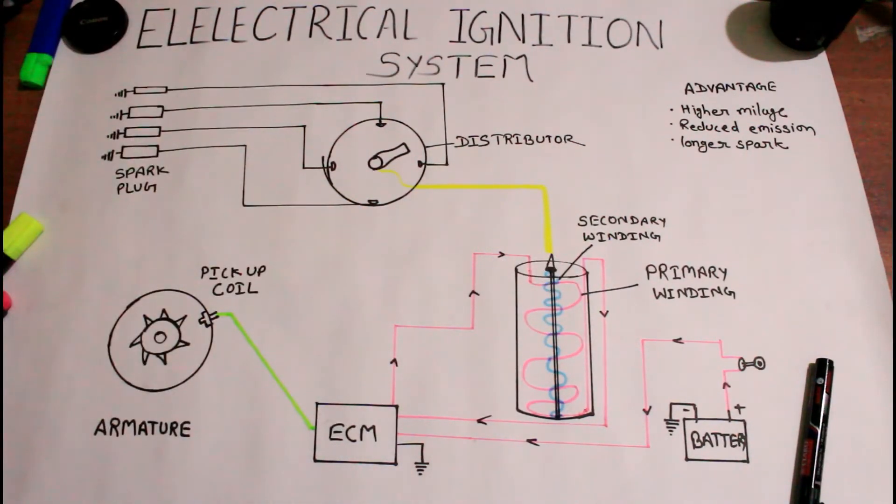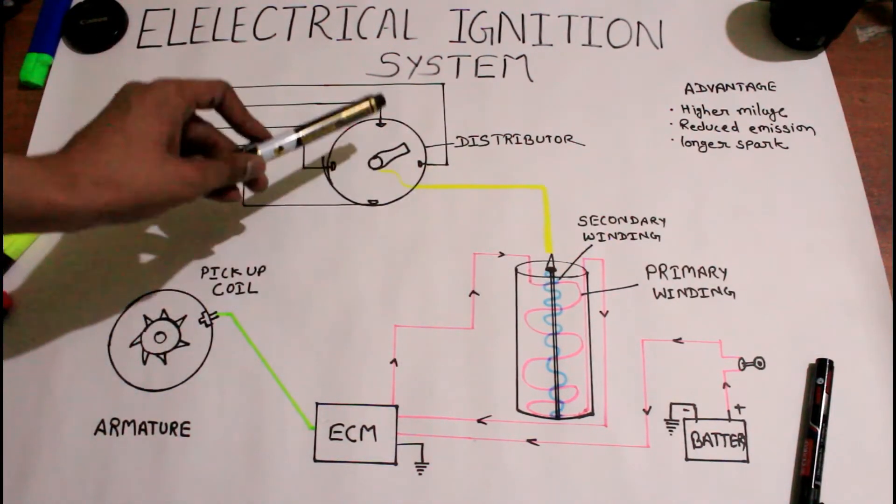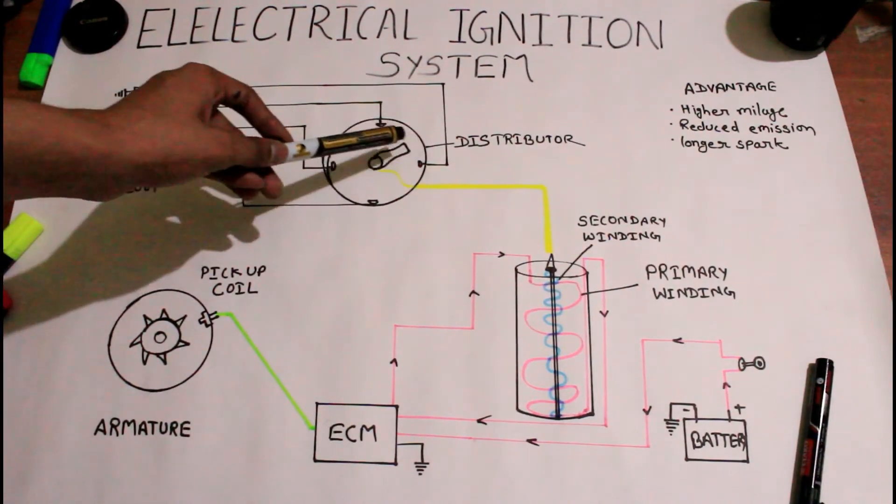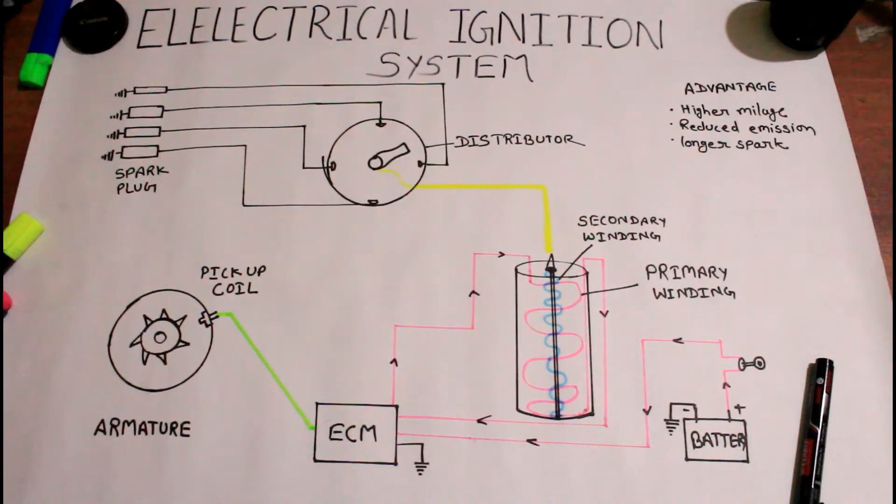Because of that magnetic field, a huge amount of voltage is generated which is sent to the distributor. The distributor sends the voltage to the respective spark plug and the further process happens.